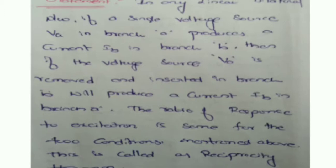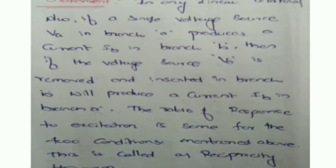That means if the voltage source is in branch A, it will produce a current in branch B. If the voltage source is replaced in branch B, it will also produce a current in branch A. The ratio of response to excitation — if voltage is given, the response will be current; if current is given, the response will be voltage — will be equal in both cases. If so, the circuit is said to be following the Reciprocity Theorem.